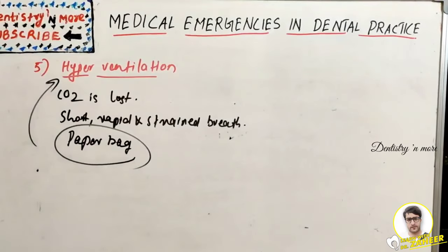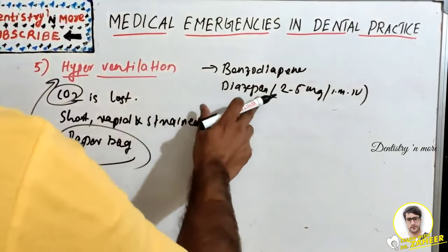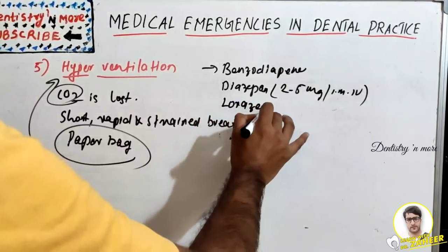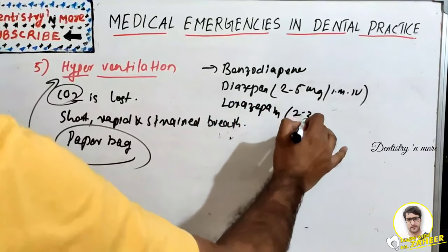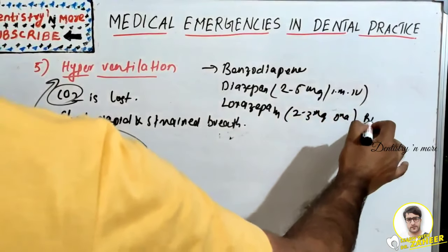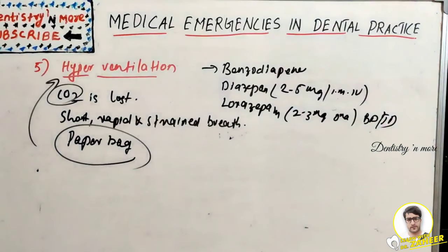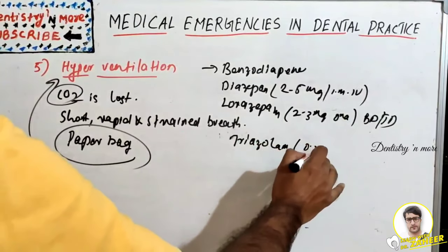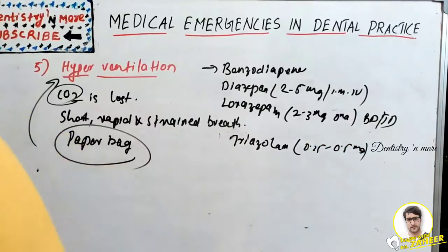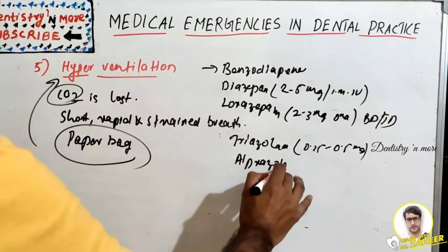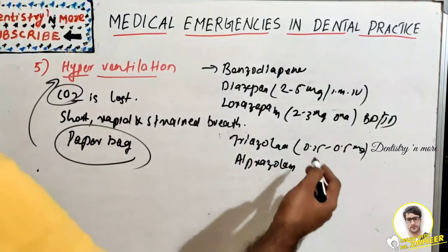Pharmacological management of hyperventilation uses benzodiazepines: diazepam 2 to 5 mg intramuscular or IV every 3 to 4 hours; lorazepam 2 to 3 mg oral given twice or three times daily; triazolam 0.25 to 0.5 mg; or alprazolam 0.25 to 0.5 mg.